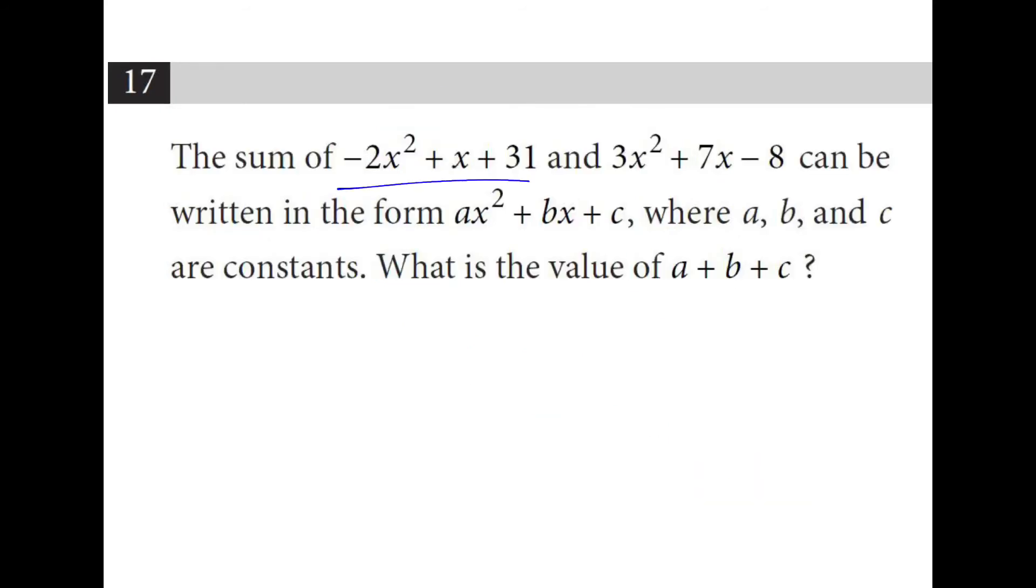The sum of these two polynomials can be written in the form a x squared plus bx plus c. What is the value of a plus b plus c? So three minus two leaves me with x squared. There's a one there. Plus eight x plus 23. So I'm adding one plus eight plus 23. This gives me 32.